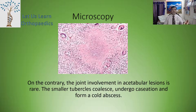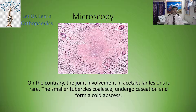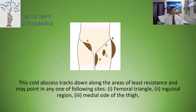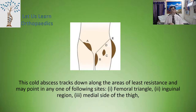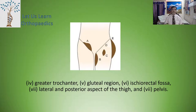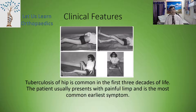The cold abscess — formed when tubercles undergo caseation — tracks down along the areas of least resistance and may point in any one of those sites, namely the femoral triangle, inguinal region, medial side of the thigh, greater trochanter, gluteal region, ischio-rectal fossa, lateral and posterior aspect of the thigh, and anywhere in the pelvis.